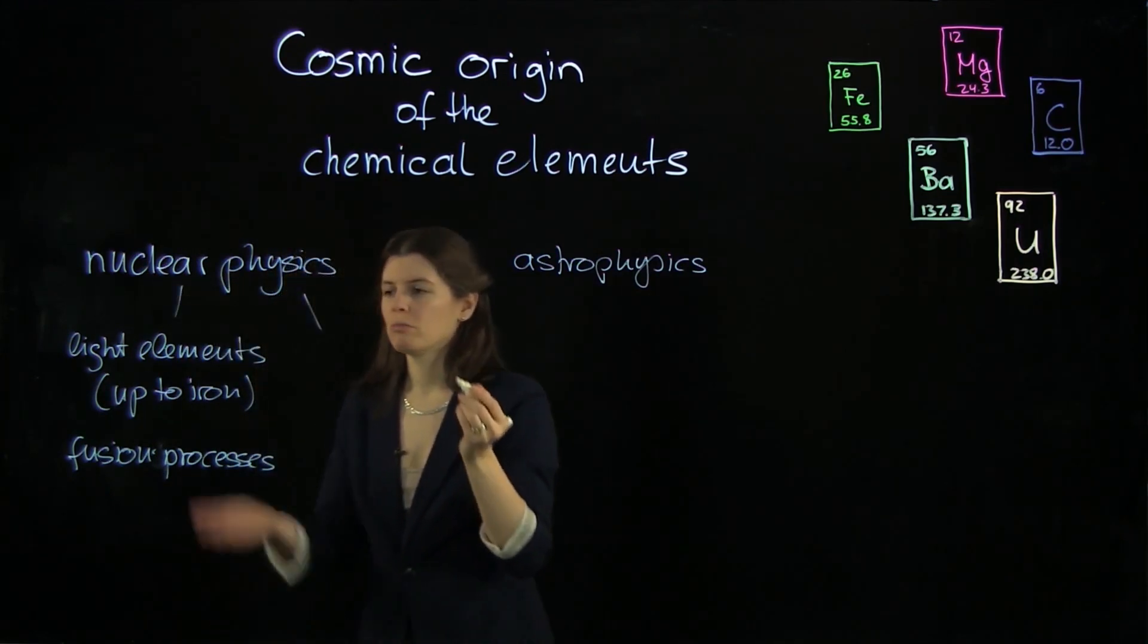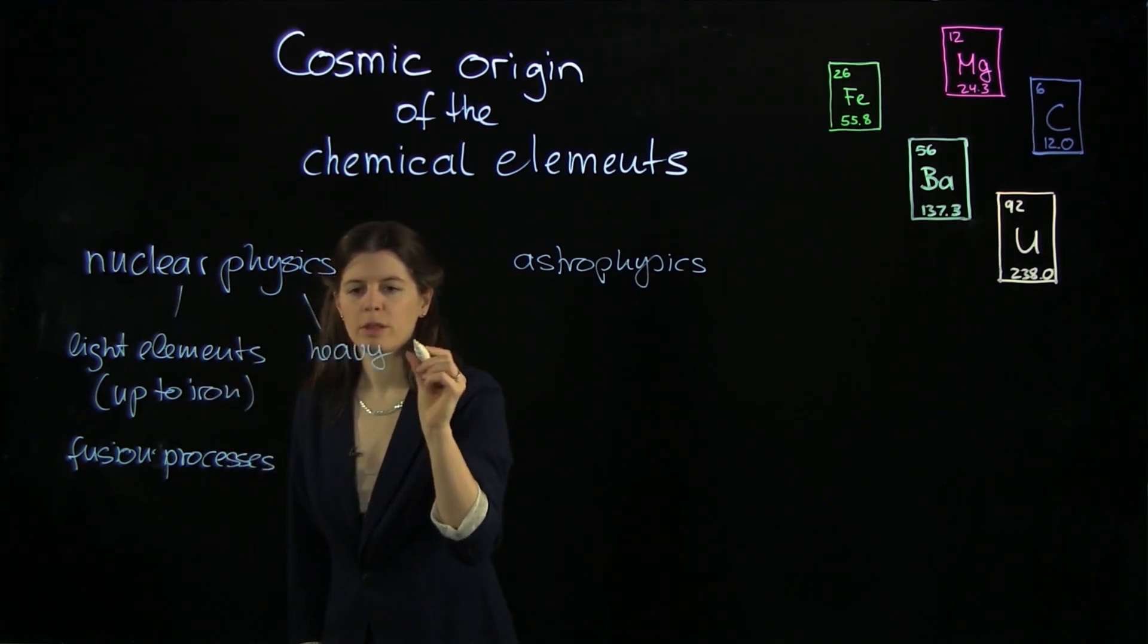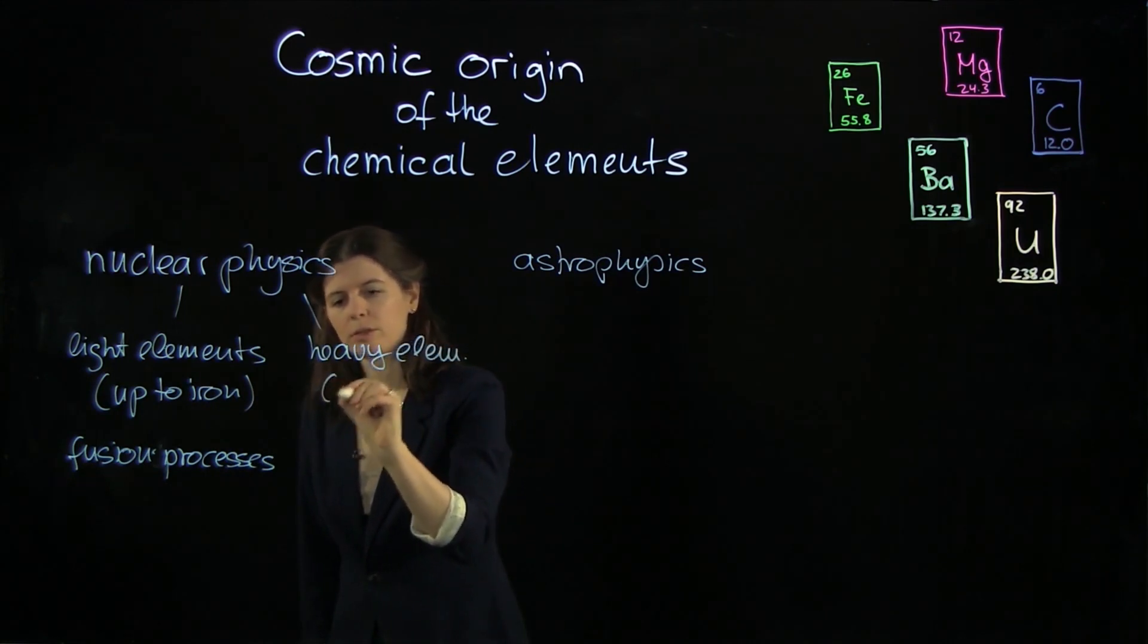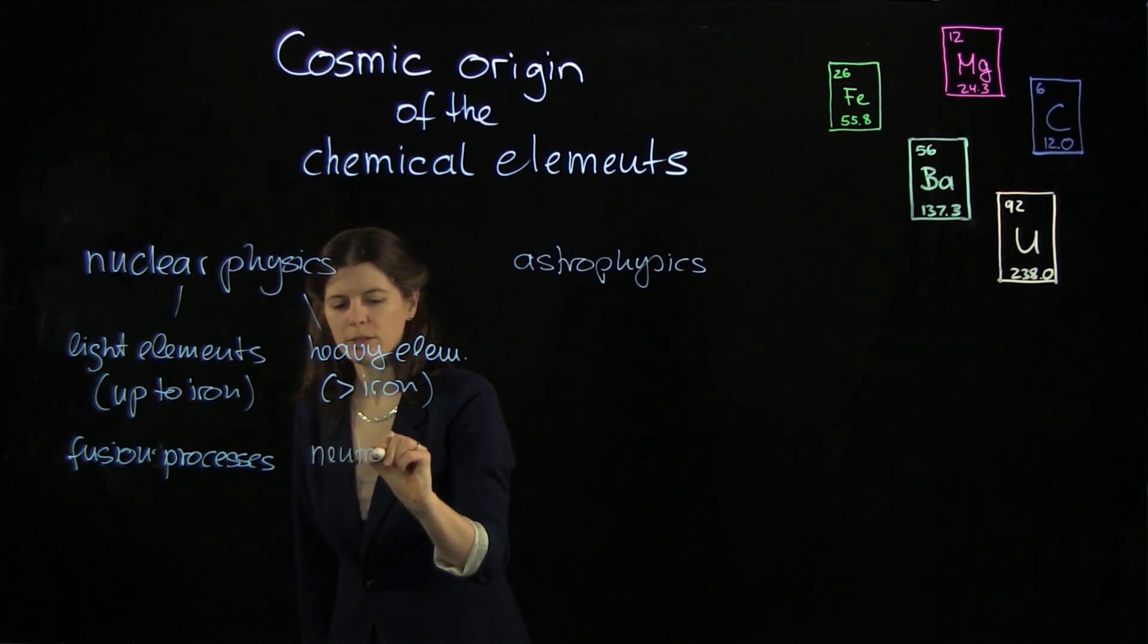And then we have also lots and lots of elements in the periodic table that are heavier than iron. So how are the heavy elements formed? So that would be heavier than iron.